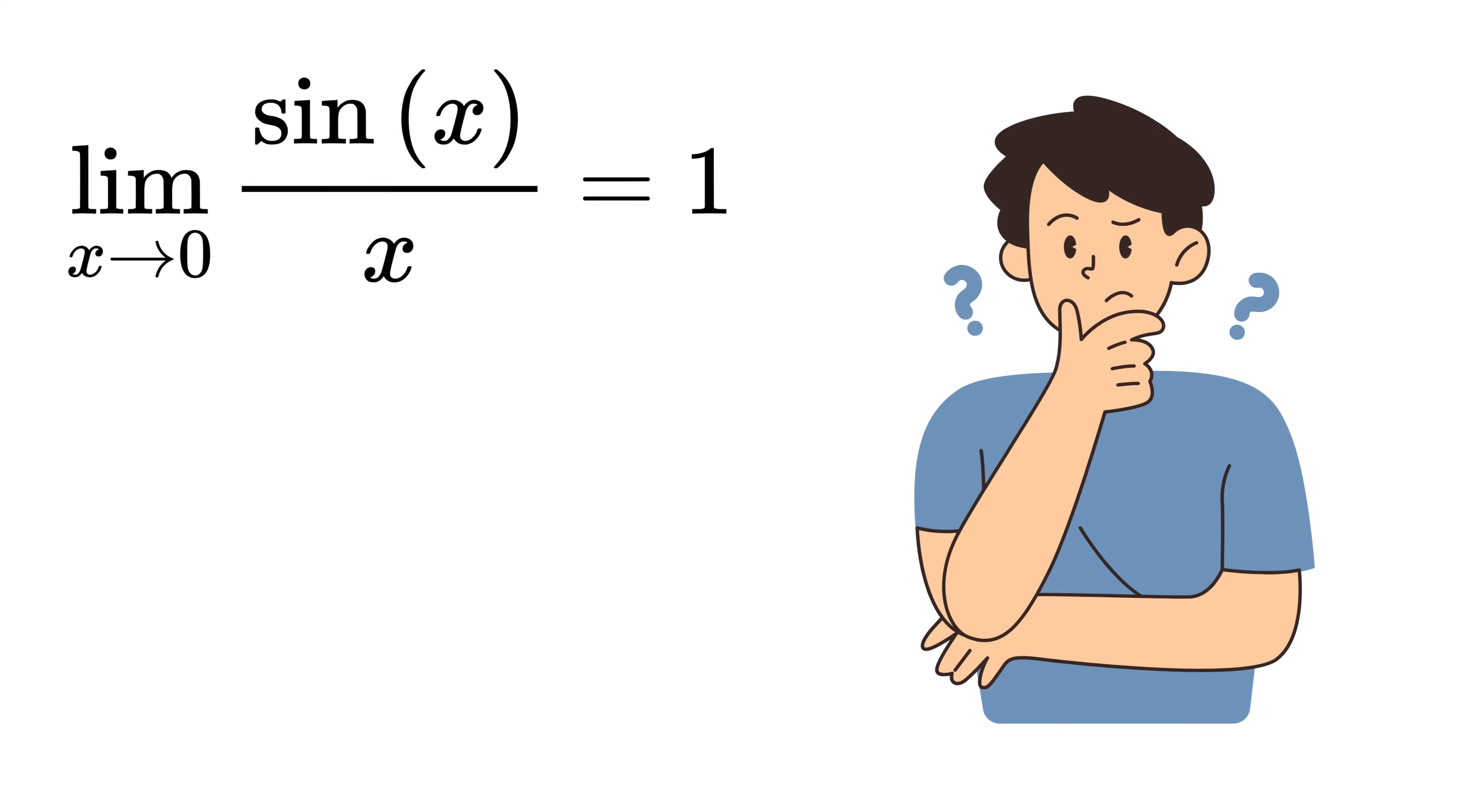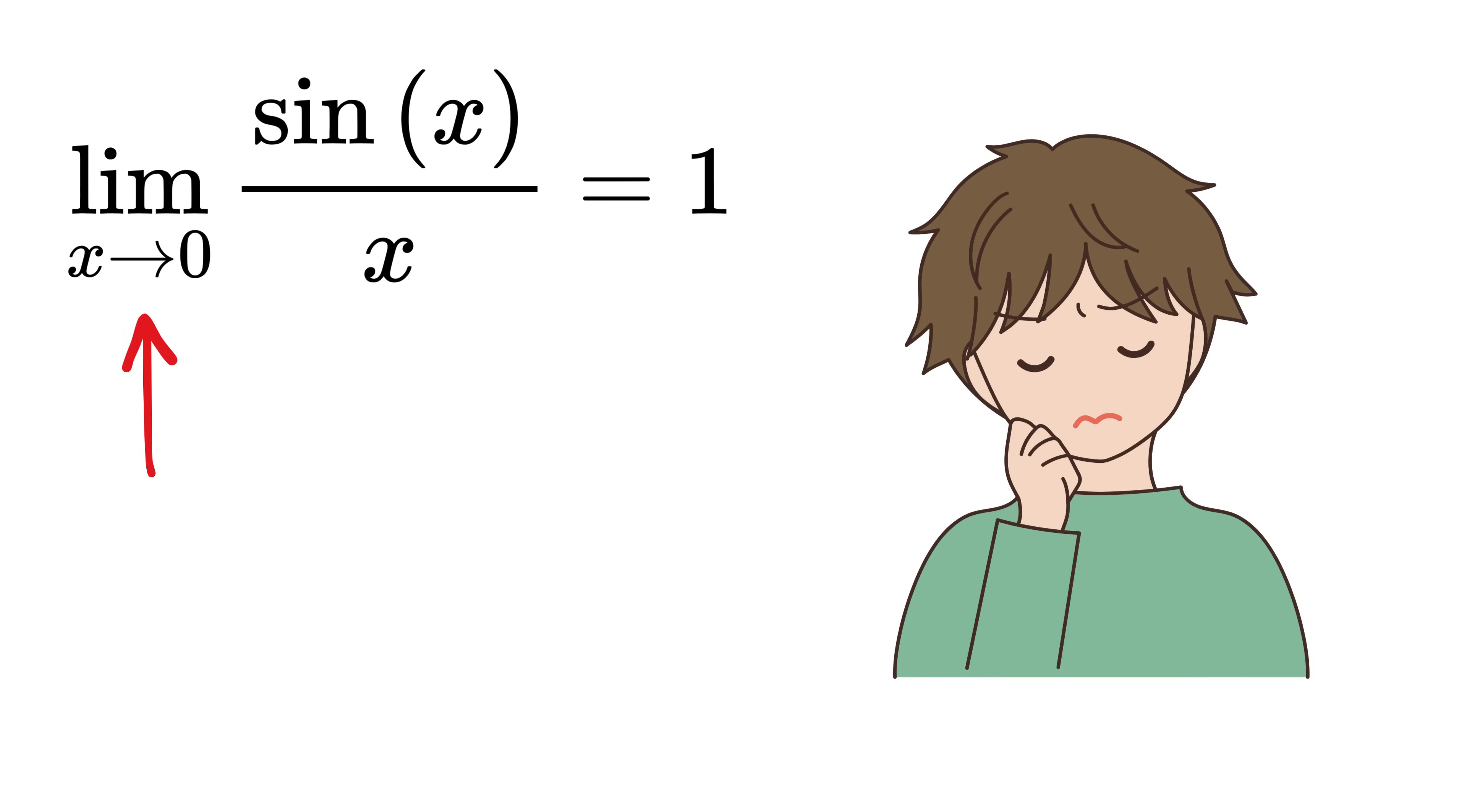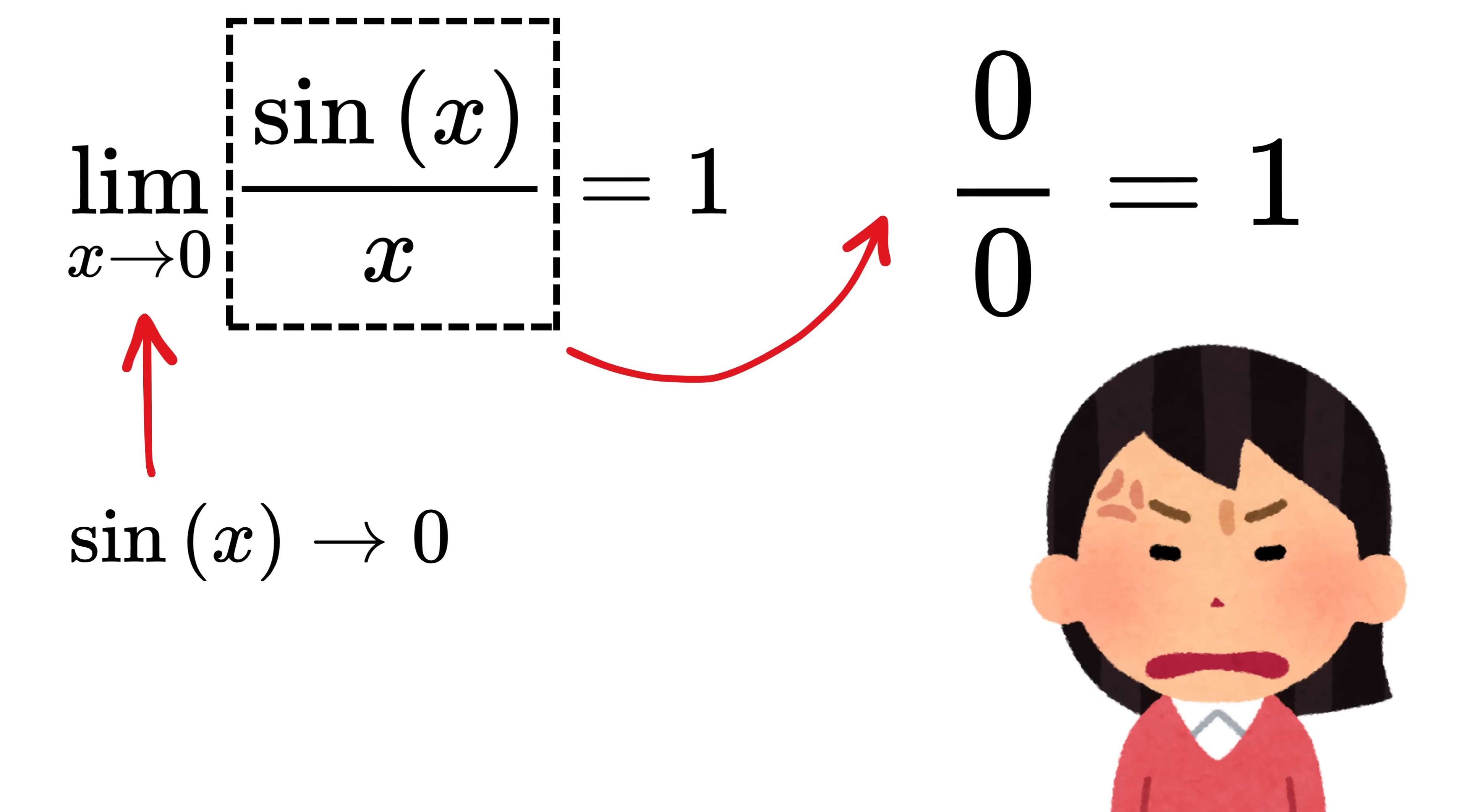But why does this happen? At first glance you might think, as x gets super close to zero, sin(x) also becomes almost zero, right? Because we know that sin(0) is zero.